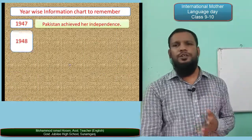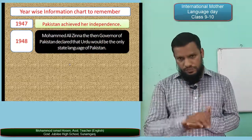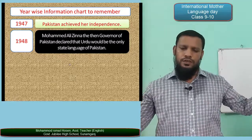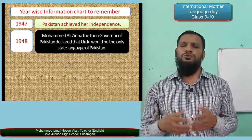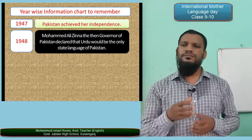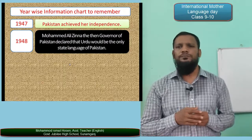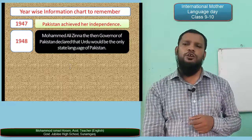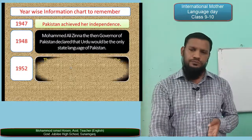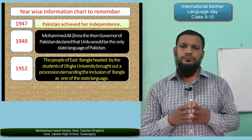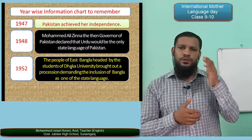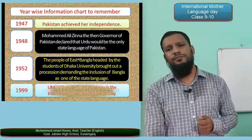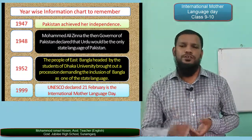Here are the probable answers. In 1947, Pakistan achieved independence — before 1947 it was under British rule along with India. In 1948, Muhammad Jinnah, the Governor-General of Pakistan, declared Urdu would be the only state language of Pakistan. In 1952, the people of East Bengal, headed by the students of Dhaka University, brought out a procession demanding the inclusion of Bangla as one of the state languages. In 1999, UNESCO declared 21st February as International Mother Language Day.